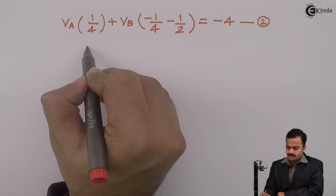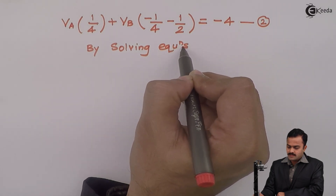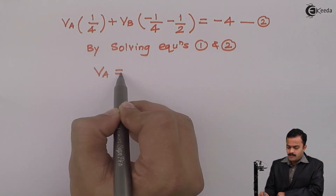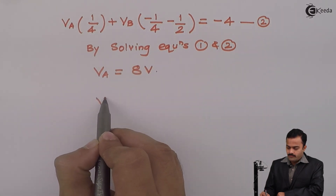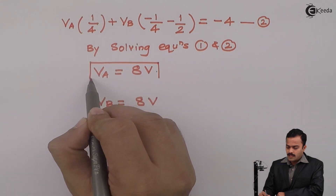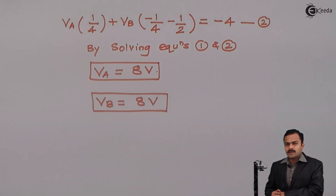By solving equations 1 and 2, we get VA = 8 volts and VB = 8 volts. VA and VB are the potentials of node A and node B. In this problem we used two current sources and two nodes, and by applying nodal analysis — which is the application of KCL — we obtained the node voltages. In subsequent videos we will solve more numericals to reinforce this concept. Thank you.